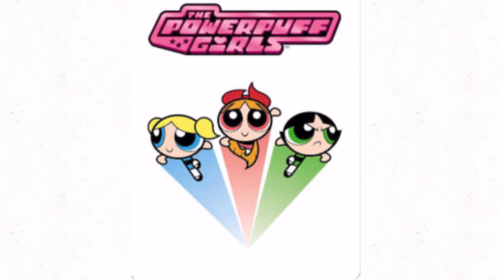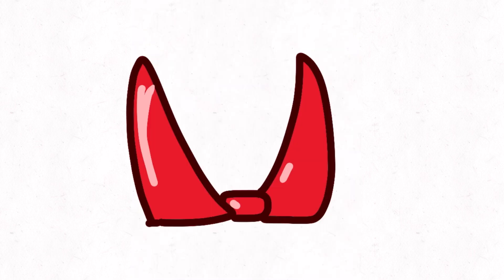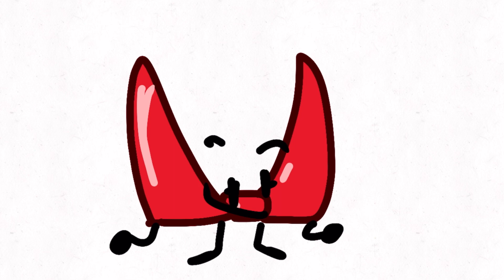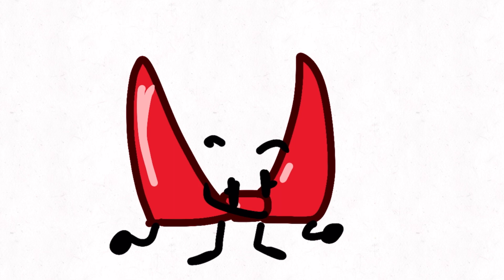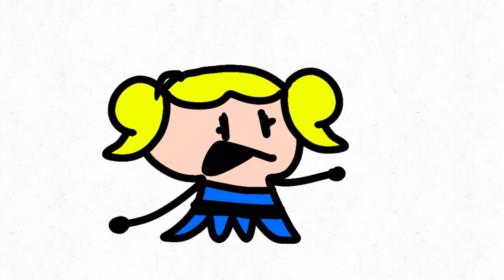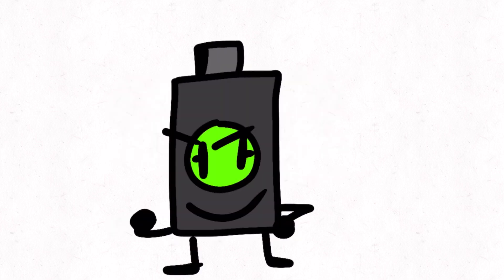First show is the Powerpuff Girls, a really memorable show. Blossom wears a bow, so we're going to use her bow. And Bubbles has this octopus toy, so we made her an octopus. And when I think of Buttercup, I think of a spray can, so we're just going to use that.